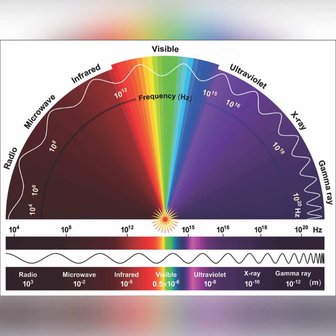Photons travel in harmonic waves at the fastest speed possible in the universe. The waves have certain characteristics given as frequency, wavelength, or energy.